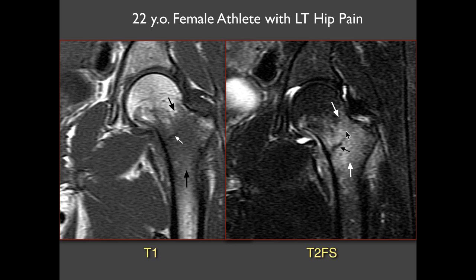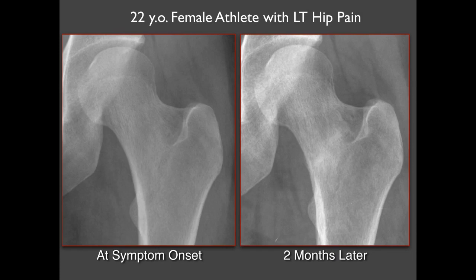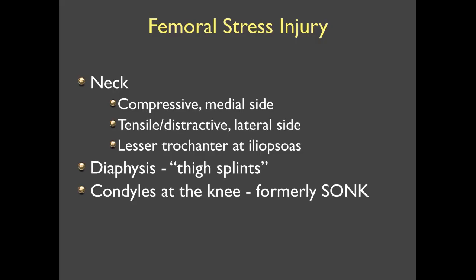Osseous stress injury occurs in the setting of more chronic repetitive injury. Here's an athlete with a low-signal fracture line in the mid femoral neck surrounded by a lot of low signal on T1 and high signal on T2 — a common type of femoral neck stress fracture in athletes, typically incomplete and on the compressive side. On radiography, these may be completely occult at symptom onset; on follow-up you may see sclerosis or subtle callus formation along the fracture line. These are important to detect because completion of the fracture can lead to complications. They occur most commonly on the compressive side, occasionally on the tensile side laterally.